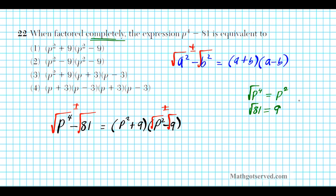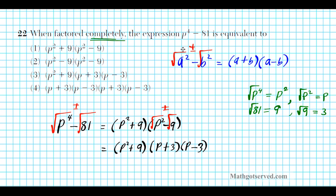Bringing it all together, the complete factorization of p to the fourth minus 81 is p squared plus 9 times p plus 3 times p minus 3. The answer is option number 3.